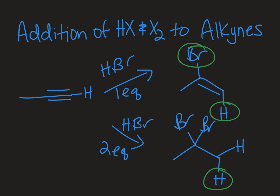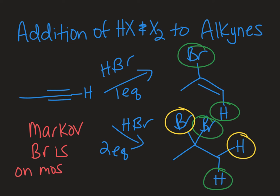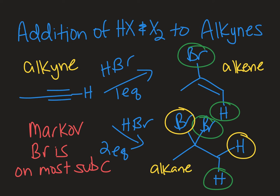For the second, I added two equivalents, so here's one equivalent, here's a second equivalent. You're going to add an H and a Br to each side. This is still a Markovnikov addition because my Br is on the most substituted carbon, just like what we see with alkenes.